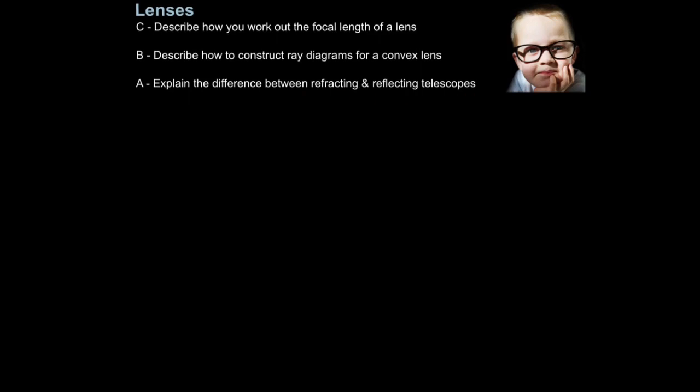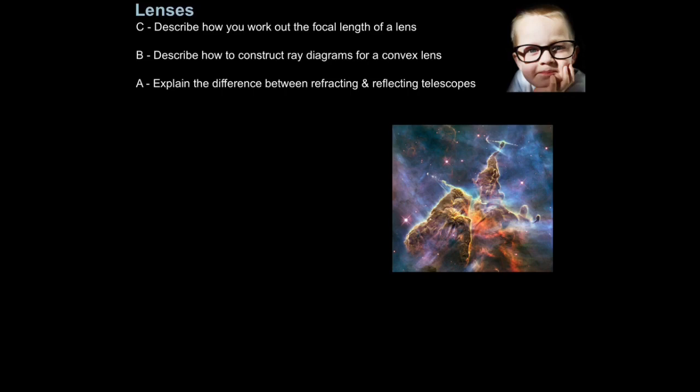In our eyes we have a lens that can change shape to focus light onto the back of our eye, an area called the retina, so we can see images clearly. Sometimes our lenses aren't perfect so we need other lenses to correct them. But lenses are way more interesting than that — our mastery over manufacturing lenses has enabled us to command light in a way that we can now see things we could never have seen before.